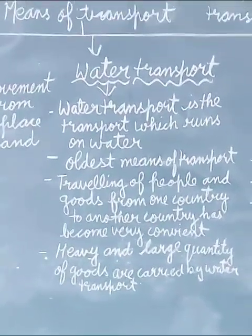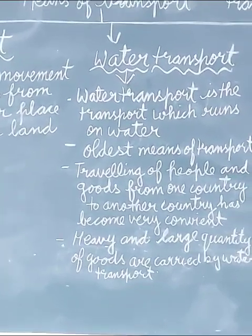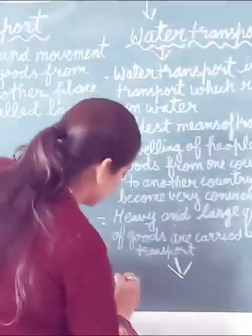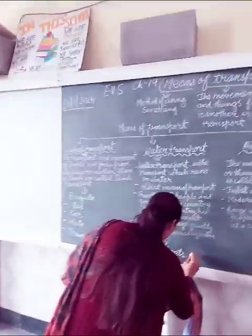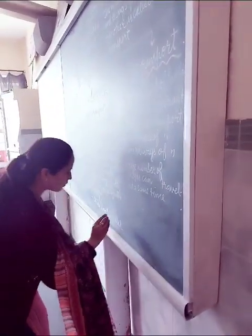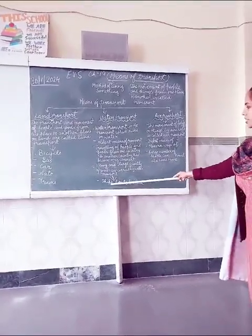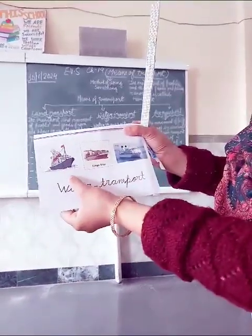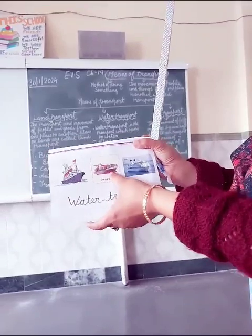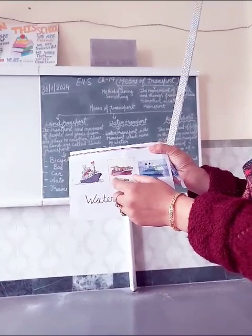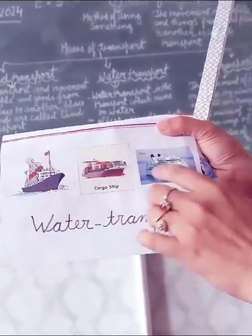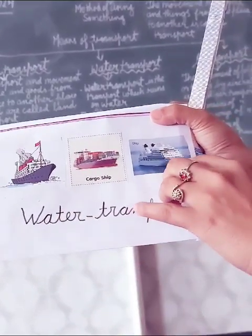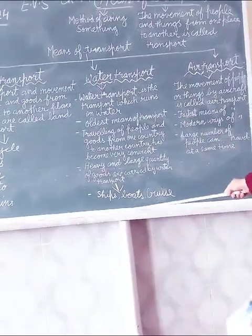The examples of water transport are ships, boats, and cruise ships. Cargo ships are used for sending goods from one country to another country when goods are in large quantity and heavy. Cruise ships are used when we travel from one country to another country, or domestically as well. Ships and boats are also common examples of water transport.